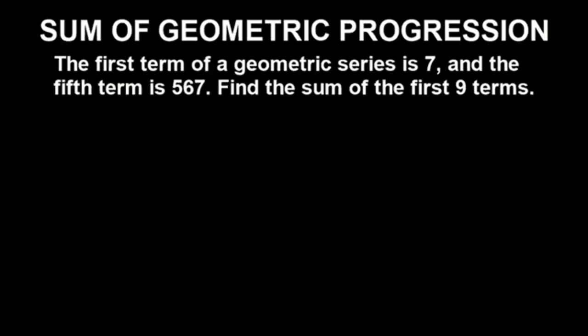We are now going to learn how to solve the sum of a geometric progression using a calculator easily, in a matter of seconds, especially for multiple choice questions. Let's look at this example: the first term of a geometric series is 7 and the fifth term is 567. Find the sum of the first 9 terms.